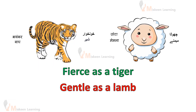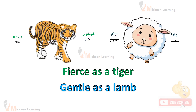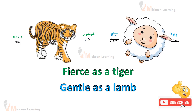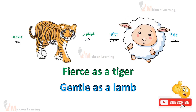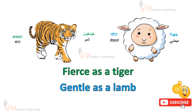Fierce as a tiger — eek tiger ki tira khunkhoar. Gentle as a lamb — eek lamb ki tira, yani eek bheer ke bachche ki tira, sheep ke bachche ki tira, gentle. Yani naram tabiat ka, naram mizaj ka. Ye hai character comparison — yani ye in janwaro ki fitrat patata hai, revealing the nature of these animals.